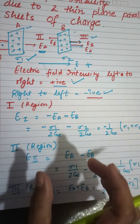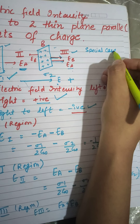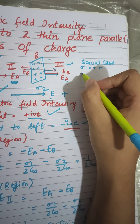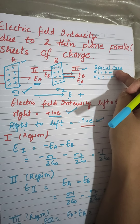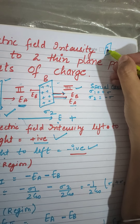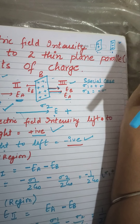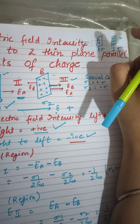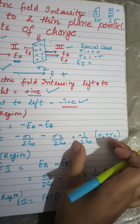Now I have a special case. In this special case, sigma-1 equals plus sigma and sigma-2 equals minus sigma — meaning one sheet is positively charged and the other has the same magnitude but is negatively charged. So the surface charge densities are plus sigma and minus sigma. Let's find E in the first region using the values we derived.